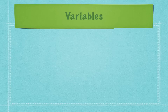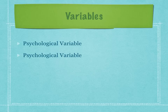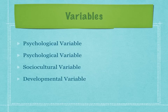The variables that can affect a client's system include: the physiological variable, which refers to bodily structure and internal functions; the psychological variable, which refers to mental processes and interactive environmental effects both internally and externally; the sociocultural variable, which refers to the combined effects of social and cultural conditions and influences; the developmental variable, which refers to age-related development processes and activities; and the spiritual variable, which refers to spiritual beliefs and influences.